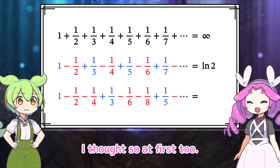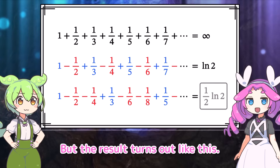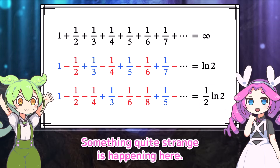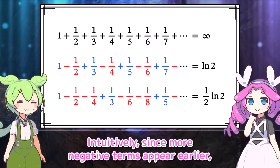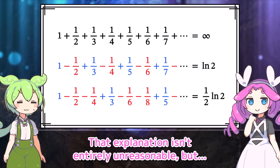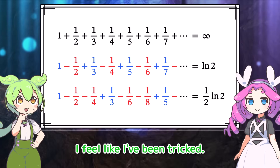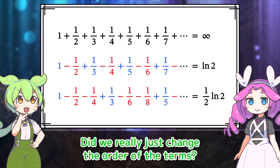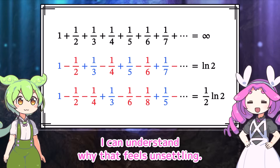I thought so at first too. But the result turns out differently. Something quite strange is happening here. Intuitively, since more negative terms appear earlier, the result ends up being a bit smaller. That explanation isn't entirely unreasonable, but I feel like I've been tricked. Did we really just change the order of the terms?